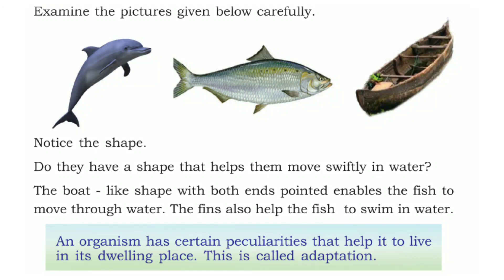Next, we discuss this picture — there are two fishes and one boat. There are similarities based on their shape. One similarity is the boat-like shape with both ends pointed, which enables the fish to move through water. The fins also help the fish to swim in water.